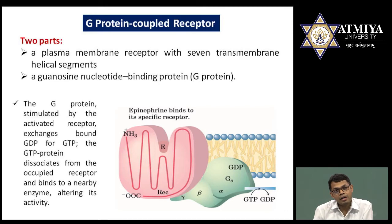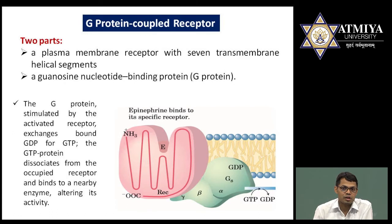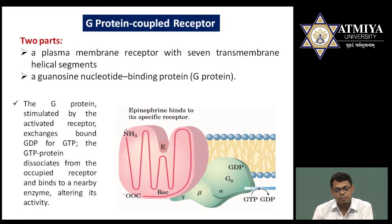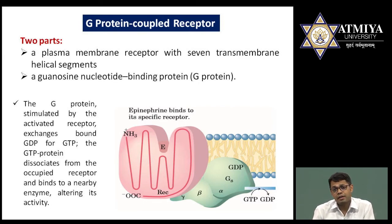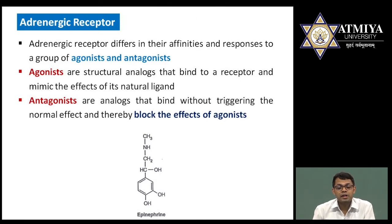G protein has dual activity: it is inactive when bound to GDP and active when bound to GTP. Until a ligand binds the receptor, the G protein remains inactive with GDP bound. Once ligand binds, conformational changes occur, GDP is exchanged for GTP. The G protein is made up of Gs-alpha, beta, and gamma subunits, but GTP mainly binds to Gs-alpha, which then becomes activated and biological responses occur.